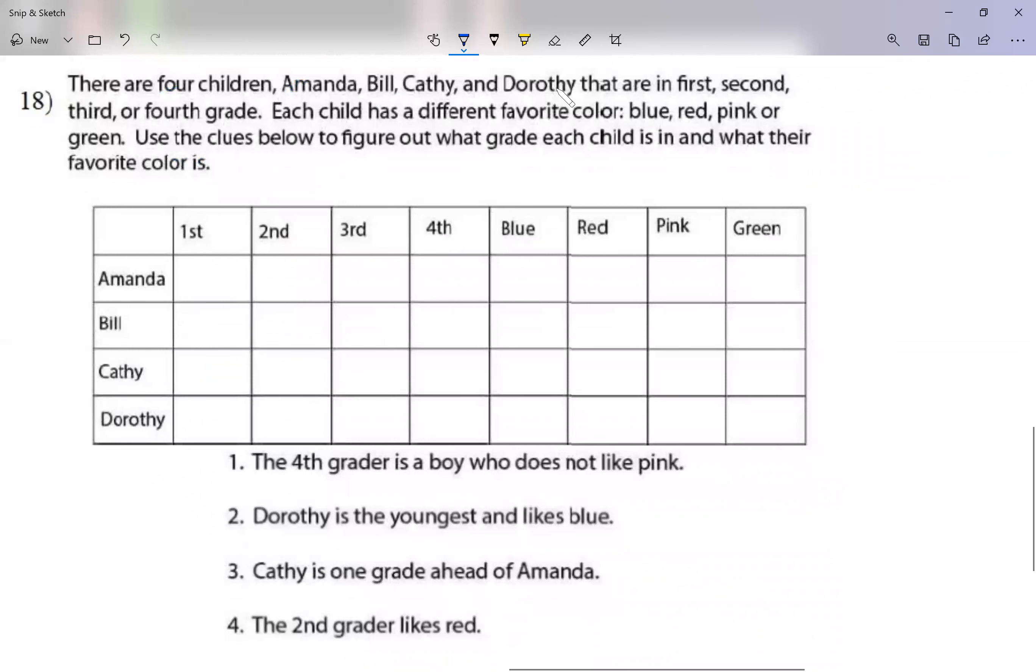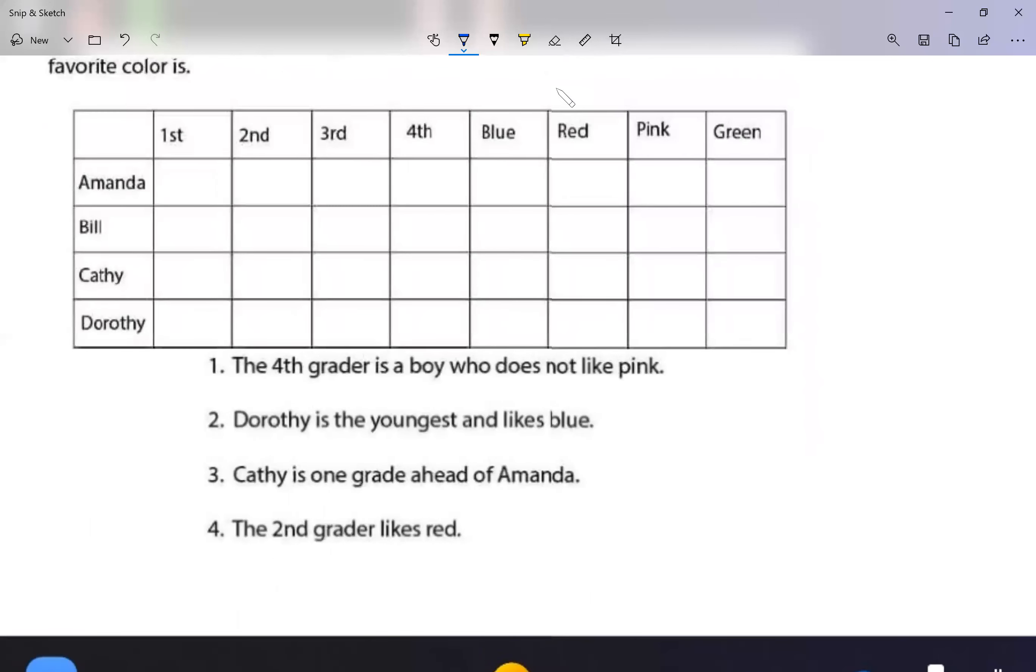There are four children: Amanda, Bill, Cathy, and Dorothy that are in first, second, third, or fourth grade. So there's four kids and there's four grades, so one in each. Each child has a different favorite color: blue, red, pink, or green. Use the clues below to figure out what grade each child is in and what their favorite color is. Okay, so here, let's see. The fourth grader is a boy who does not like pink.